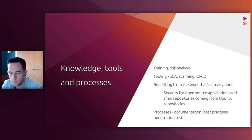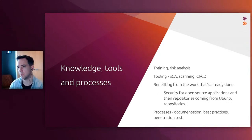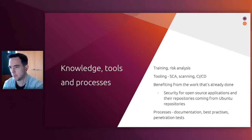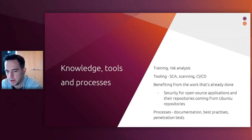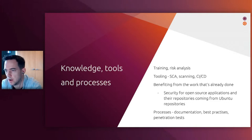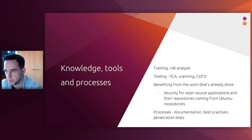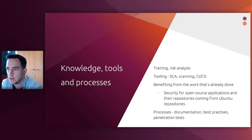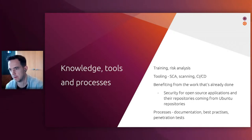New releases of Ubuntu are brought out every six months and come in a couple of different flavors. We have interim releases, which come out every six months, and then we release an LTS every two years. Those are the more well-known ones that the majority of our users are using. The most recent LTS was 22.04, which came out in April last year.